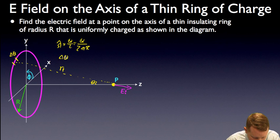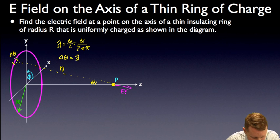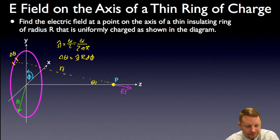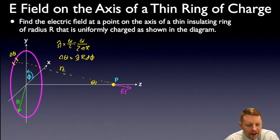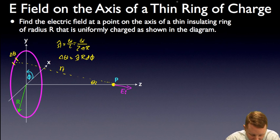Delta Q is going to be our linear charge density lambda times the length of that little section, which is going to be R times d phi. I'm going to define my angle phi as the angle around the circle. For R_i, we make a right triangle, where R_i is going to be equal to the square root of z squared plus R squared.